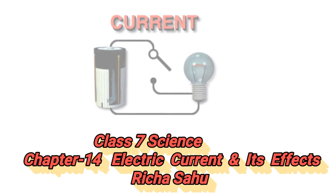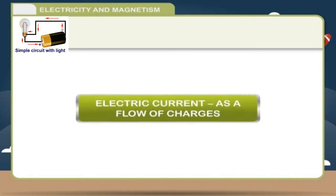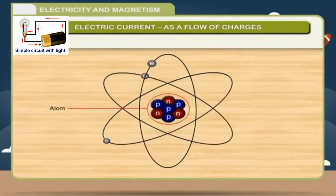Electric current is a flow of charges. As we know, atom is electrically neutral. It has positive charges such as proton. So they are attracted to the atom. Whereas, negative charges that is electrons are very light and remain in constant motion around the nucleus.